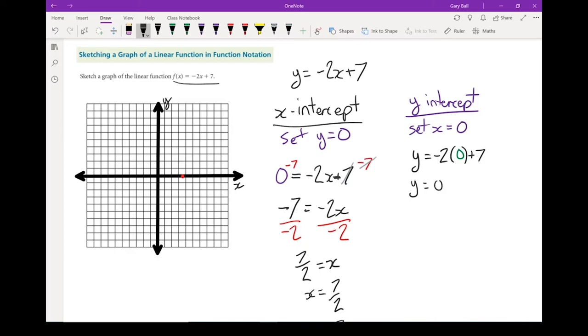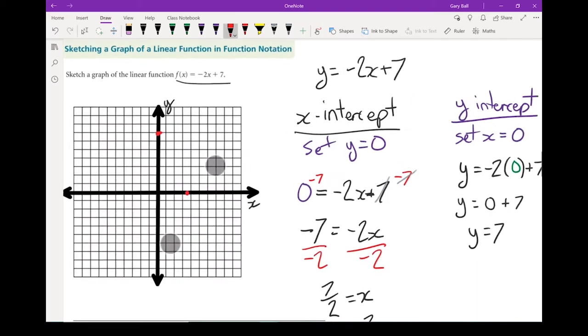And I'm going to use algebra to solve the rest of that. Negative 2 times 0 gives me 0 plus 7. My y-intercept happens at 7. If I put that over here, 1, 2, 3, 4, 5, 6, 7. There's my y-intercept.